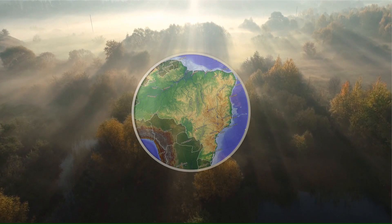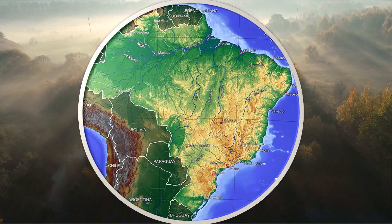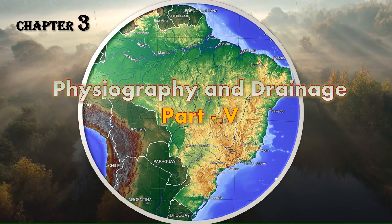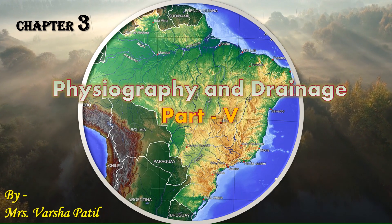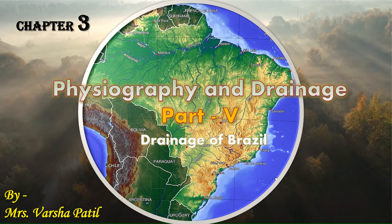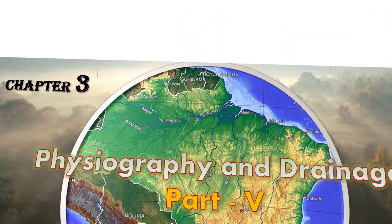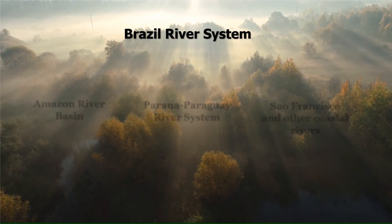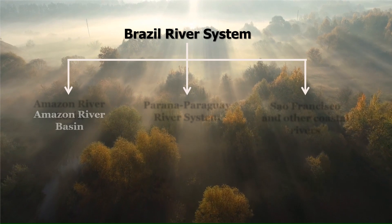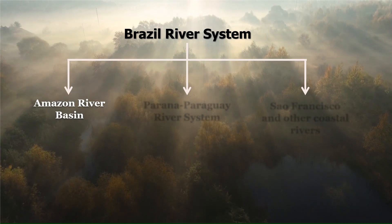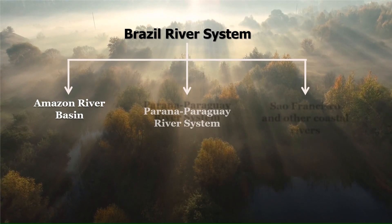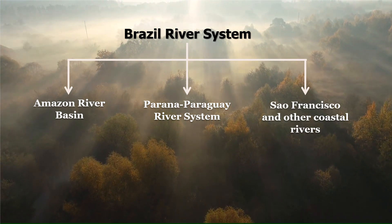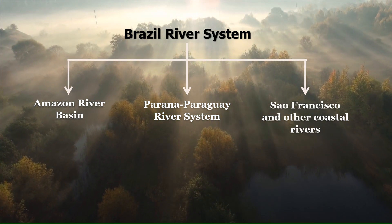Welcome back students to our fifth part of Chapter 3, Physiography and Drainage. Today we are going to cover the Drainage System of Brazil. Brazil has three major river systems: the Amazon River Basin, the Paraná-Paraguay System in the southwest, and the São Francisco in the eastern parts of the Highlands, along with other rivers at the coast.